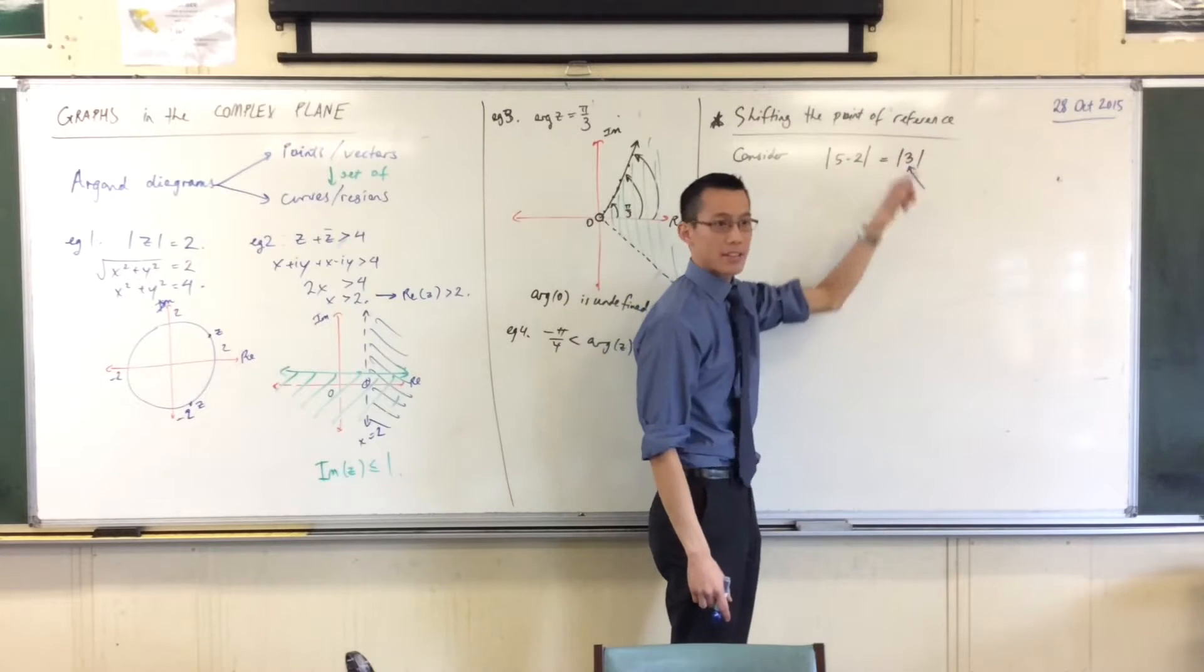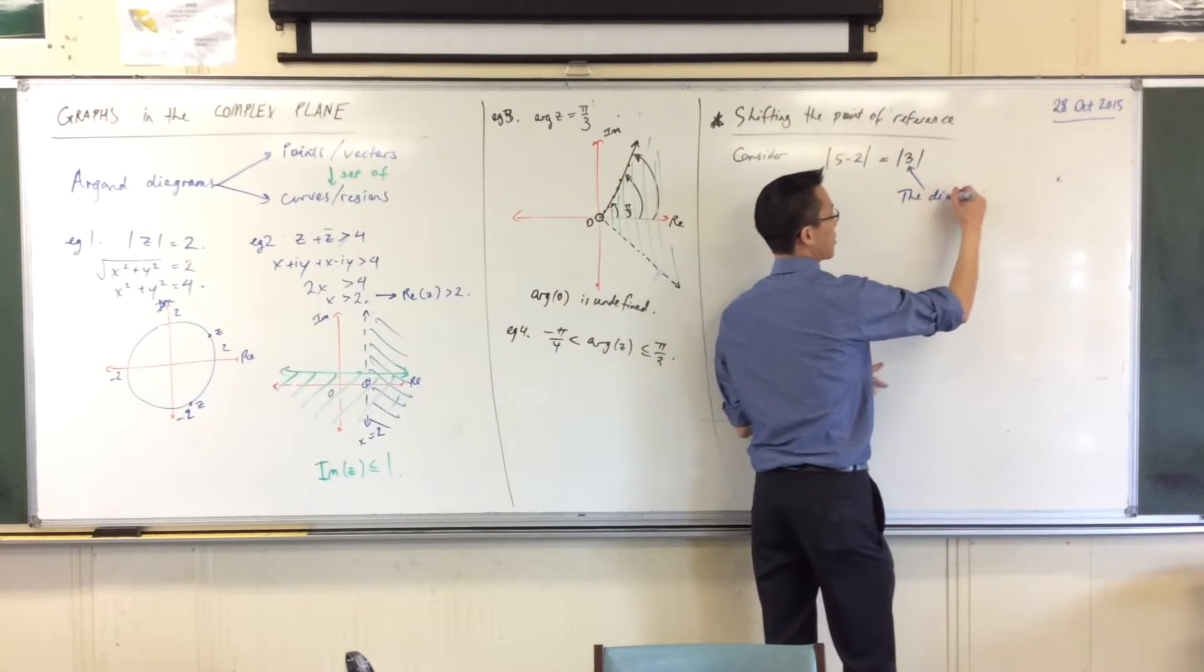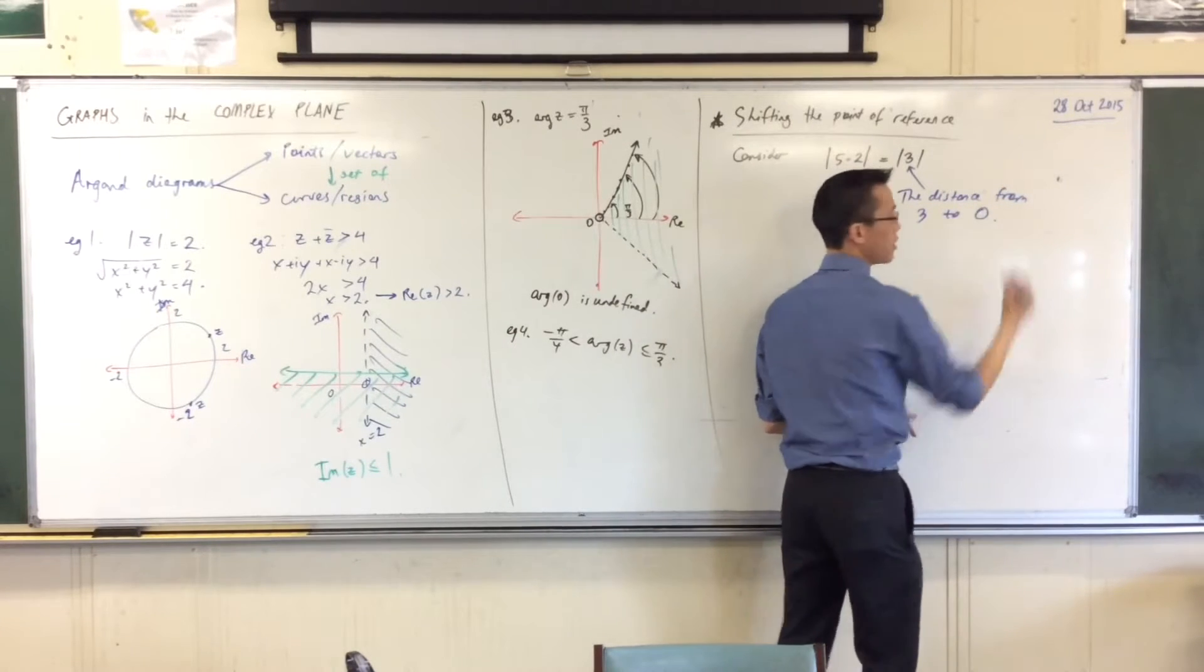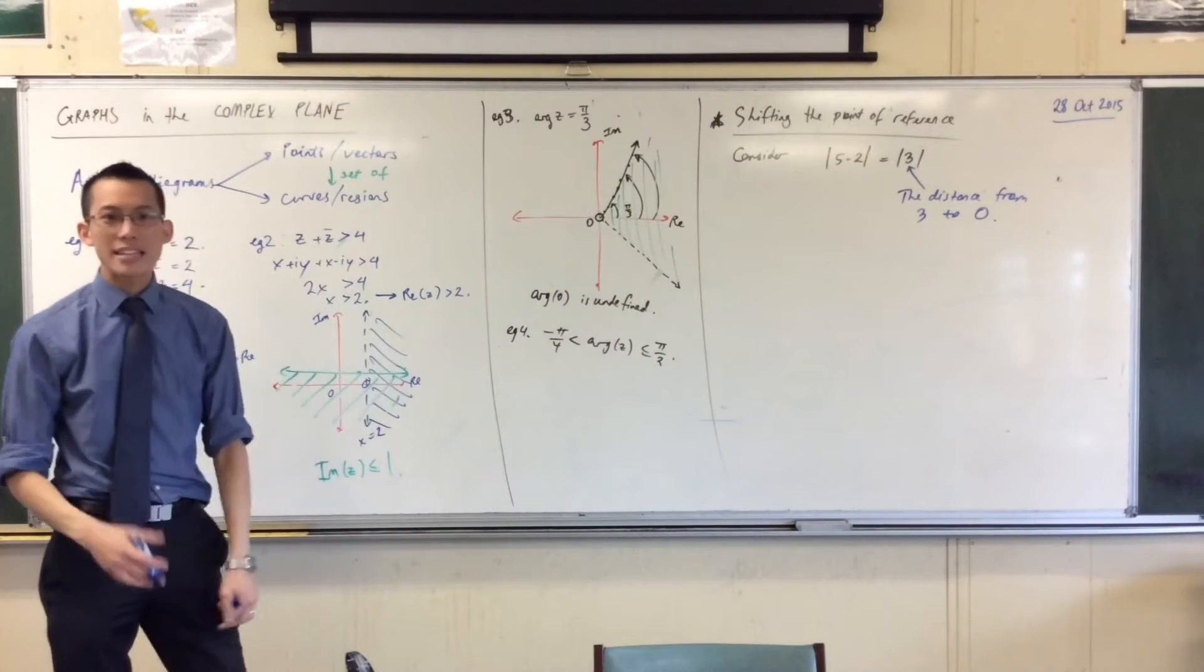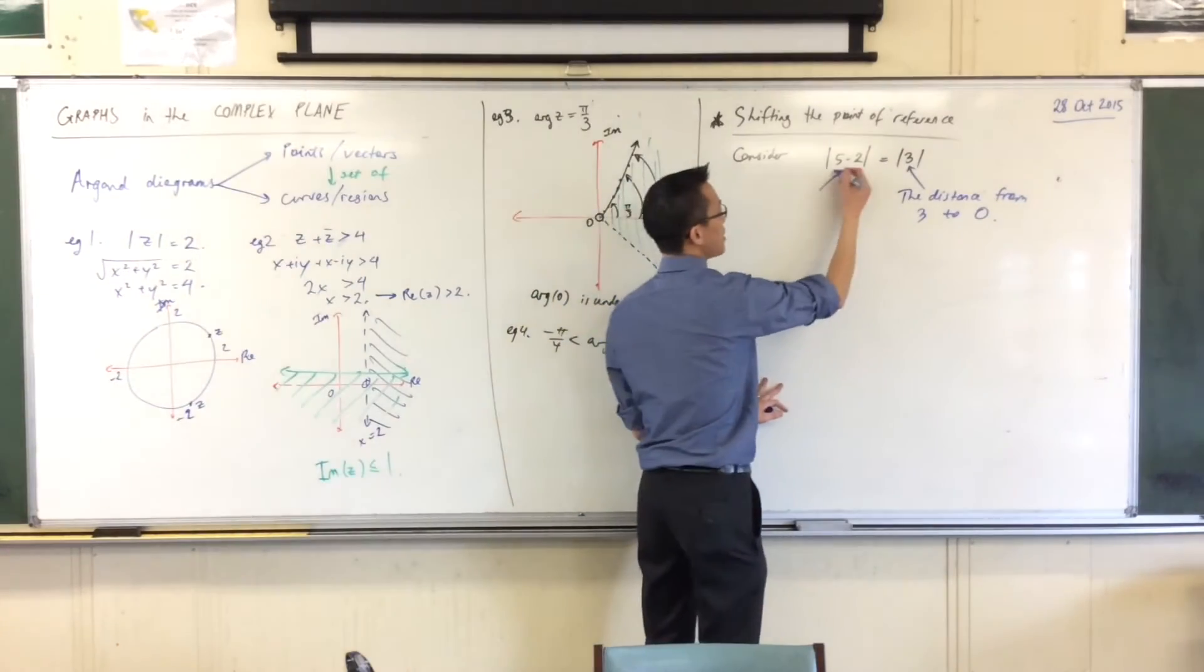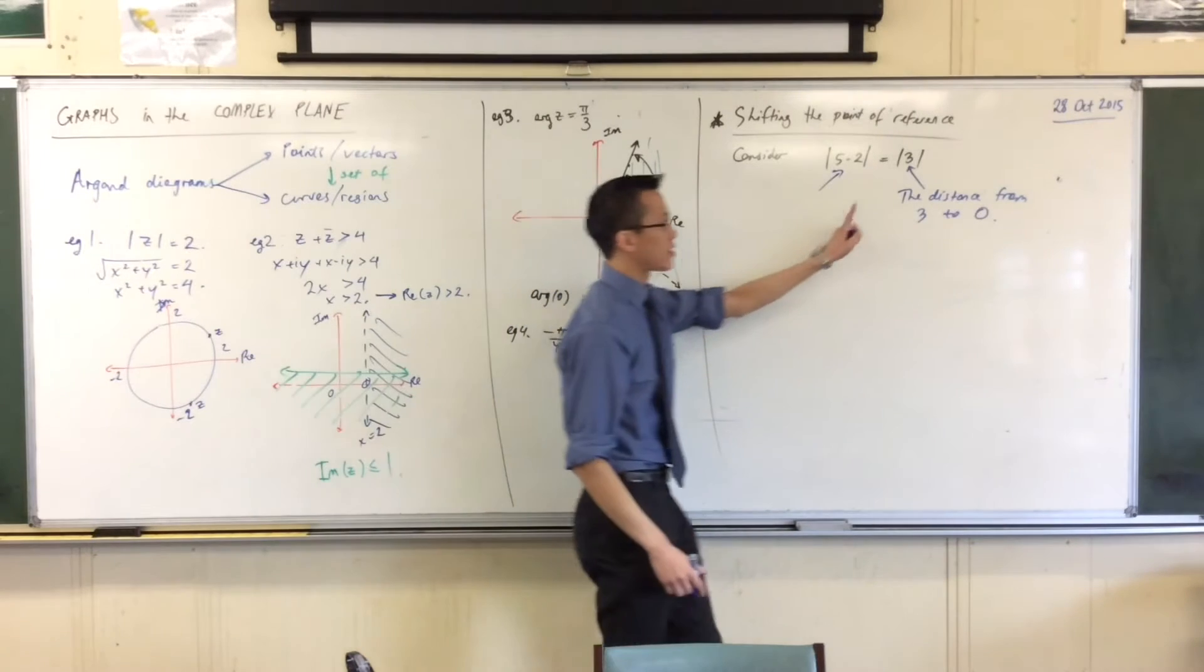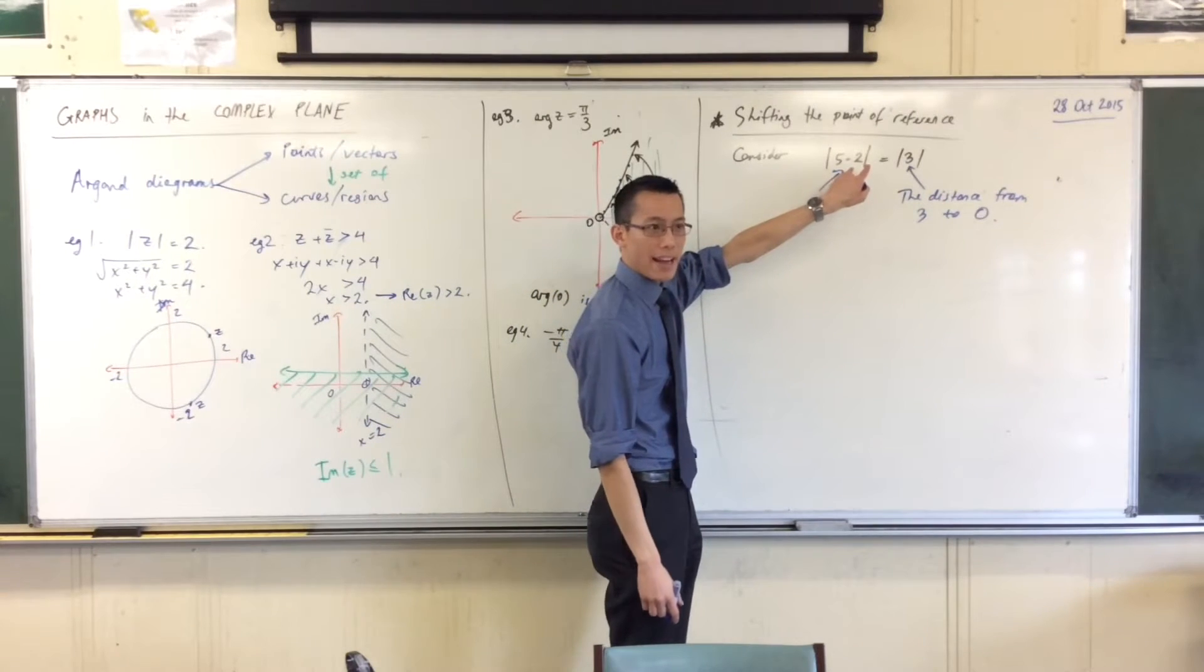So, what this right-hand side of the equation is saying is, what is the distance from 3 to the origin. That's what the right-hand side is saying. Now, the left-hand side is equal to that, because the values are the same. But the left-hand side is saying something quite different, right? It's not saying, what's the distance from 3 to 0? There's no 3 or 0 at all in there. What is there?